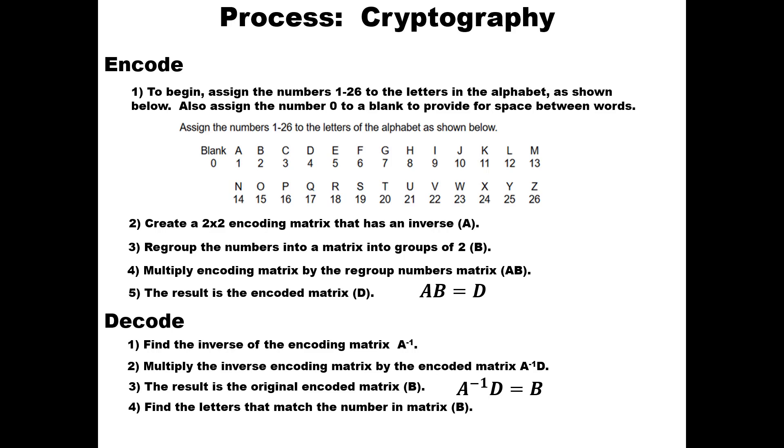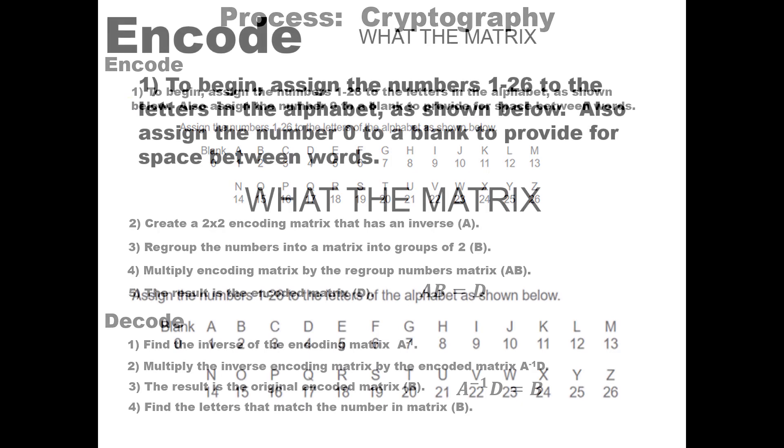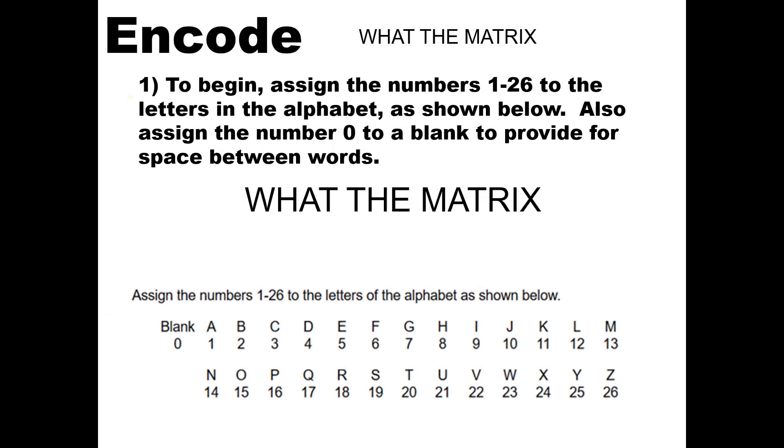Let's do an example of an encoding. We're going to encode this secret message: what the matrix. So to begin, we need to assign the numbers 1 through 26 to the letters in the alphabet. So let me show you how we do that. W is 23, H is 8, A is 1, T is 20, and then we have a space so we're going to put in a 0, and then I just filled in the rest of them.